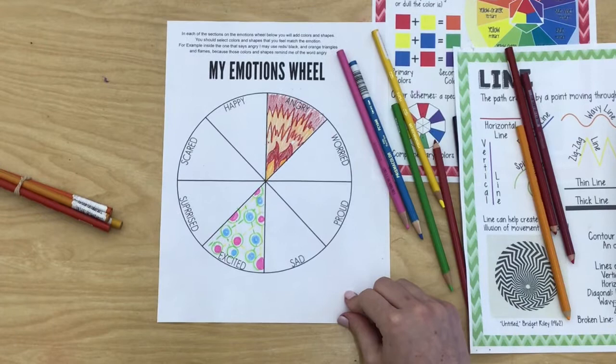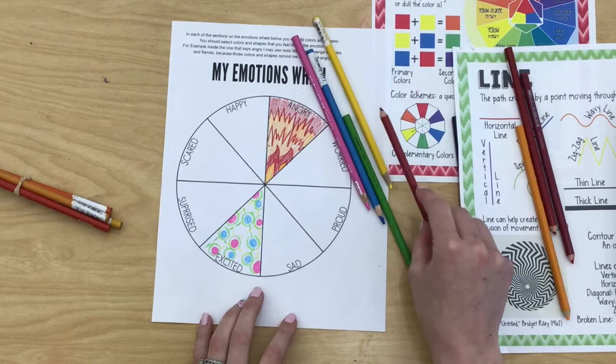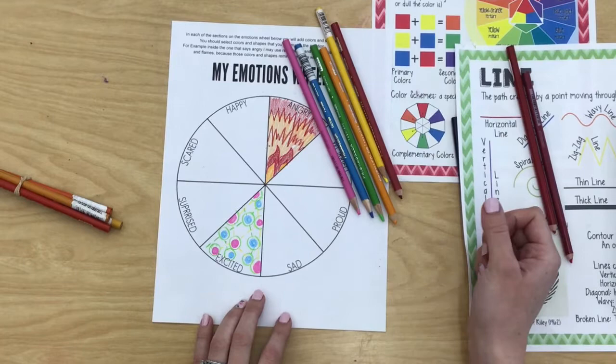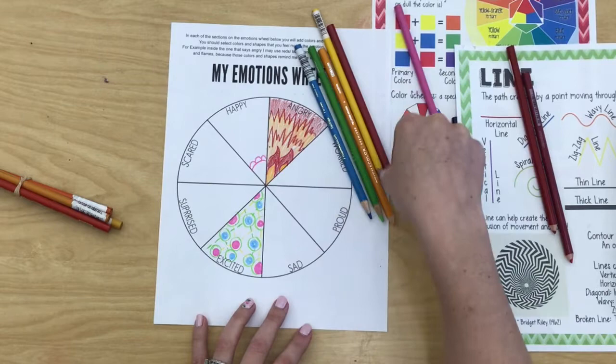Next, think about the word 'happy.' When I think of happy, I think of multiple colors — maybe some of the same colors from excited and angry — a whole rainbow of colors. For shapes, I think of curved shapes, so I'm going to draw some lines that have curved shapes on them.